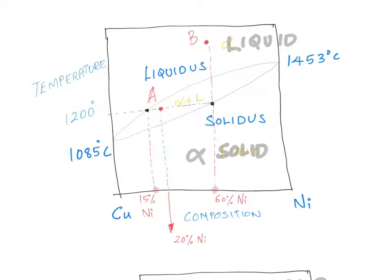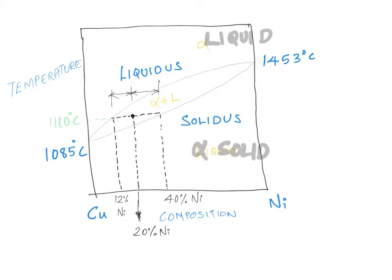Now we have two phases and we know the individual composition of each. But what will be the fraction of these phases present in a certain amount of alloy? Say I take 1 kg of alloy at 1200°C with 20% nickel - what will be the fraction of liquid phase and what is the fraction of solid phase present? There is a particular rule called the lever rule that helps us calculate the relative fraction of the different phases.